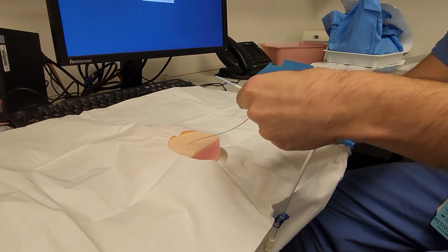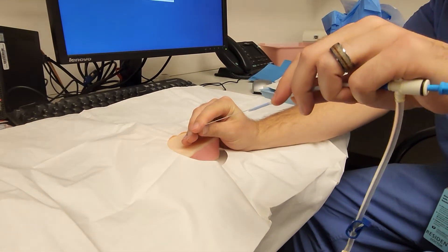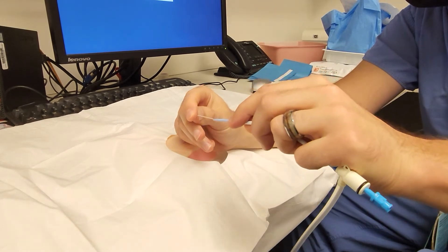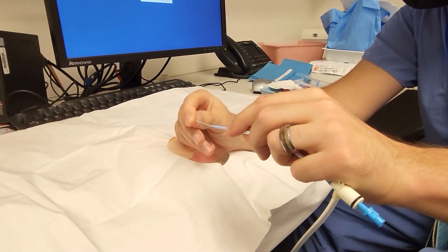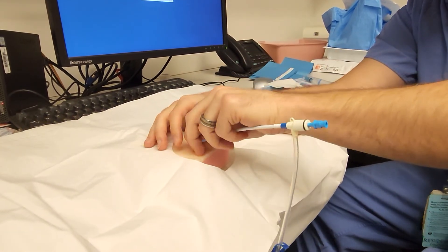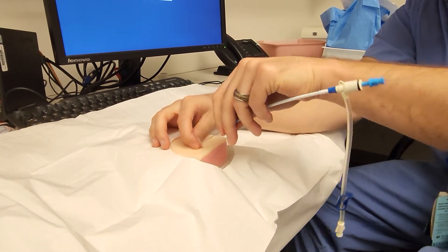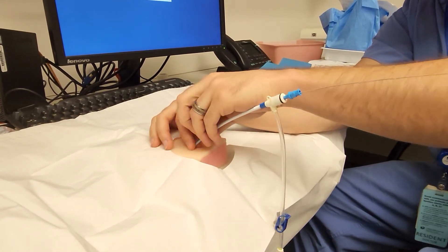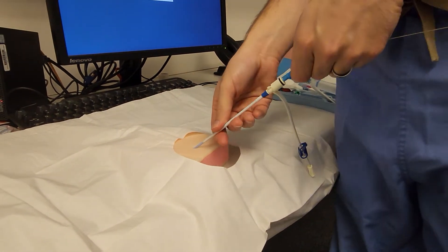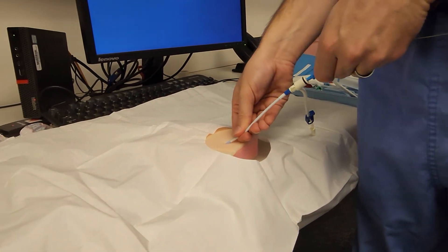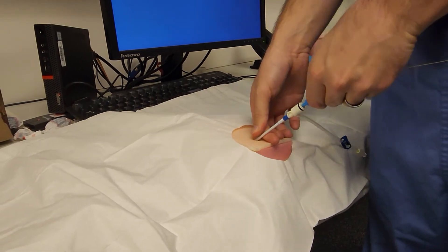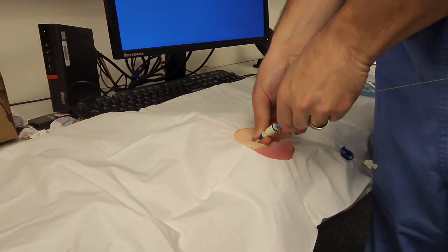And then you're going to thread the wire through the dilator and the cordis itself. And now the key with this is you're going to insert everything and hub it. So dilator and cordis all the way in.